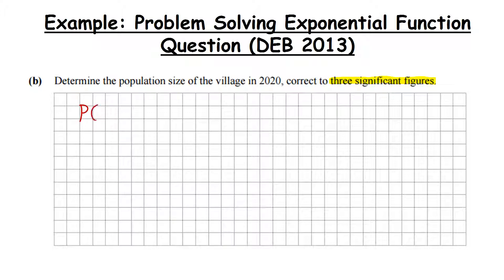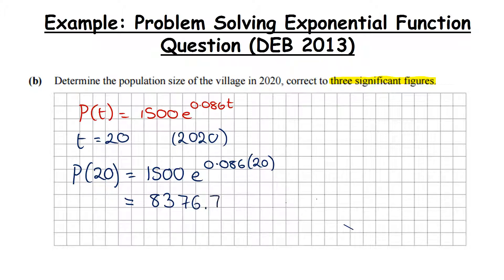Part B of this question said determine the population size of the village in 2020. What we worked out in the previous part was P(t) = 1500 e^(0.086t). Now in this case, they want 2020, which is 20 years after the year 2000. So time is equal to 20, so we're finding P(20). We're simply subbing into our formula - it's 1500 E to the power of 0.086 by 20. When you put that into your calculator and work it out, we should get 8376.79.